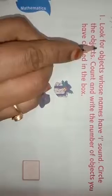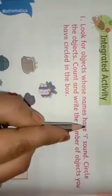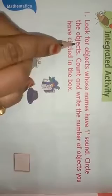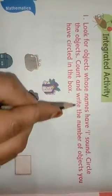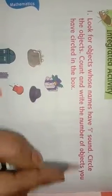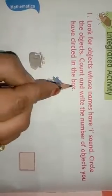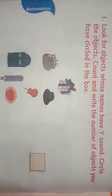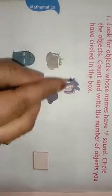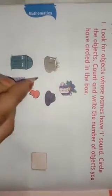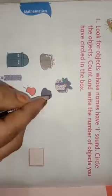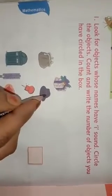Look for objects whose name have I sound. Circle the objects, count and write. Write the number of objects you have circled in the box. Here I have given some pictures here. What is this? I sound should be circled in the box and how many numbers you have to count? Write down.